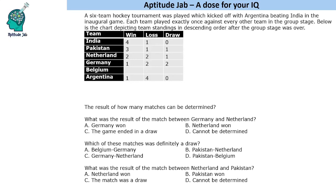Welcome to Aptitude Jab. This is a set based on games and tournaments. There is a six-team hockey tournament with these teams. It started with Argentina beating India in the inaugural game. Each team played exactly once against every other team in the group stage.